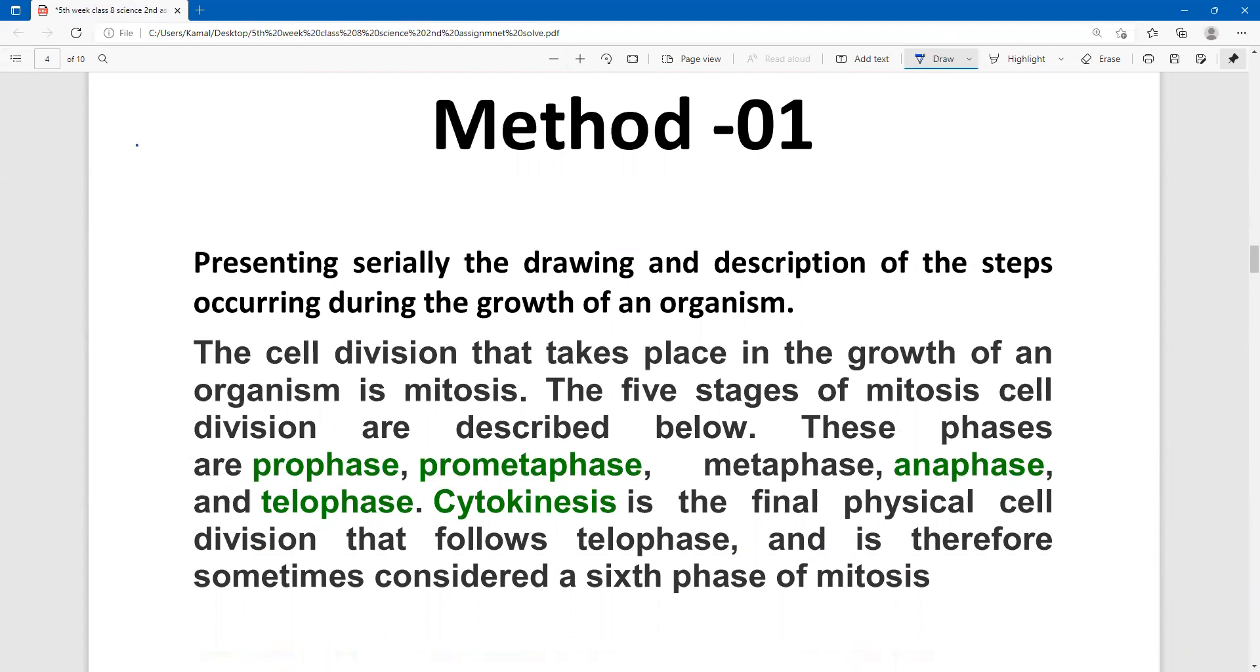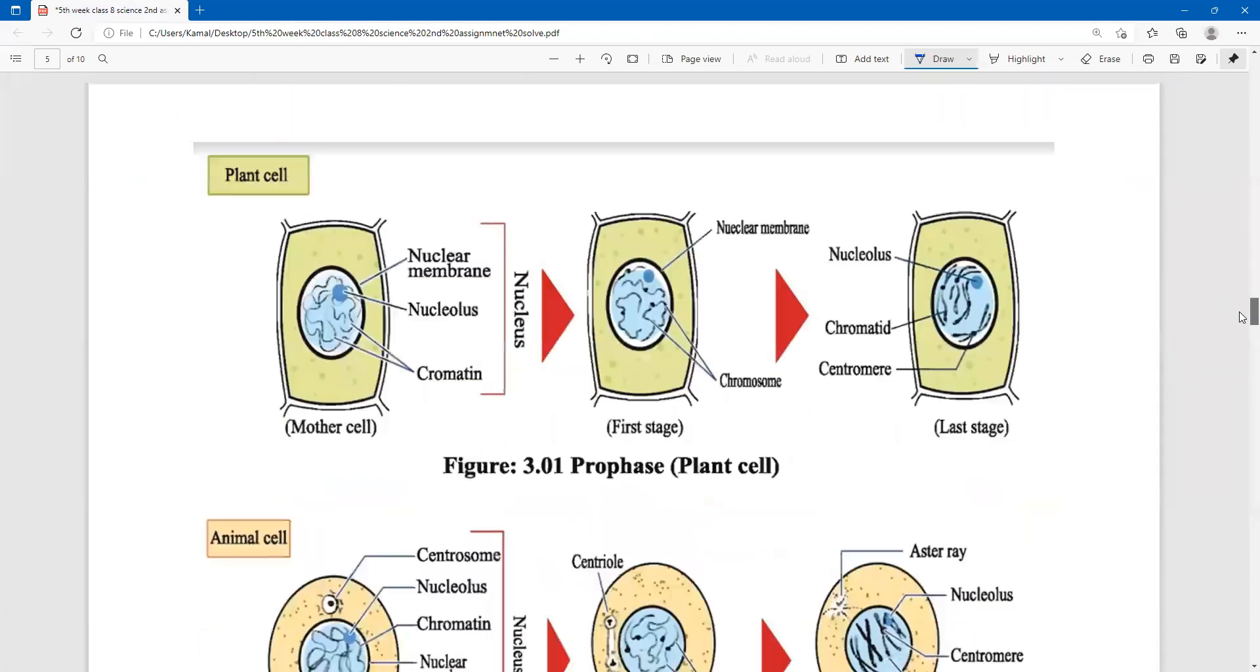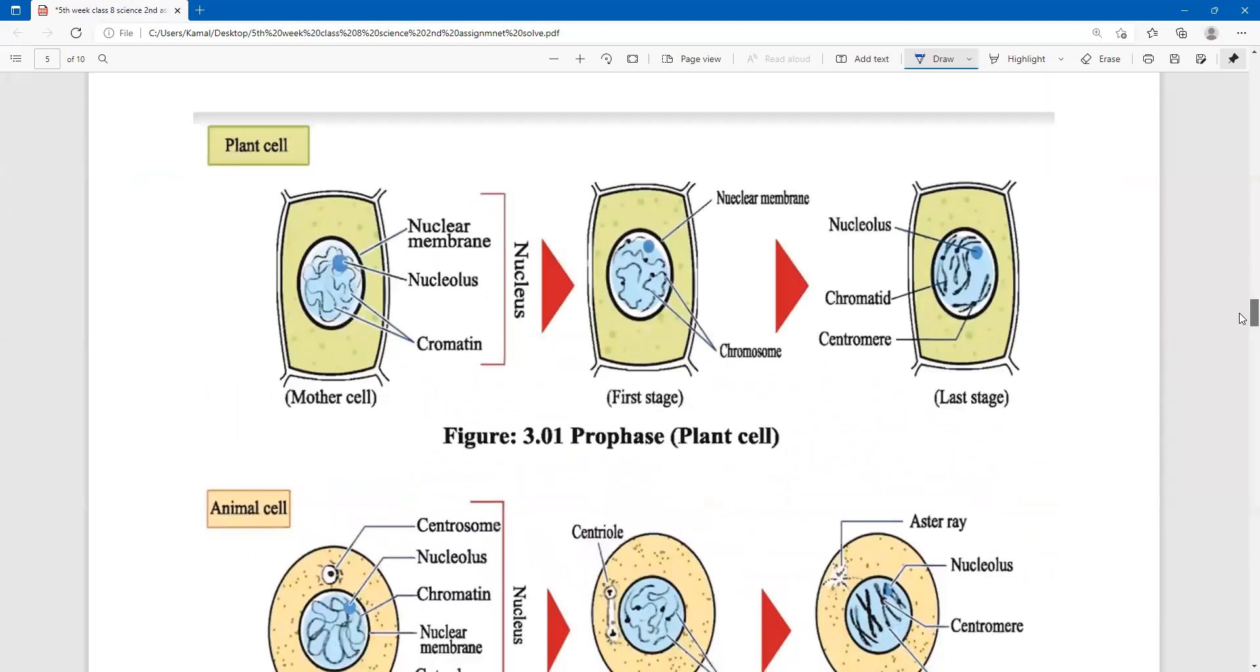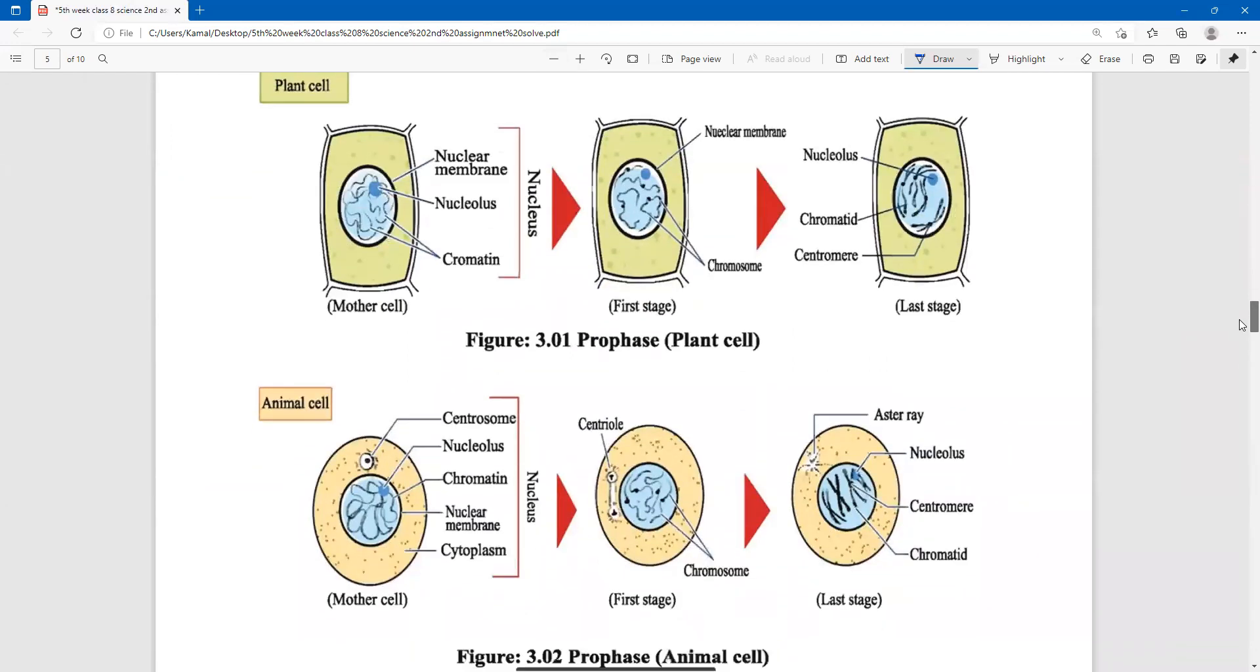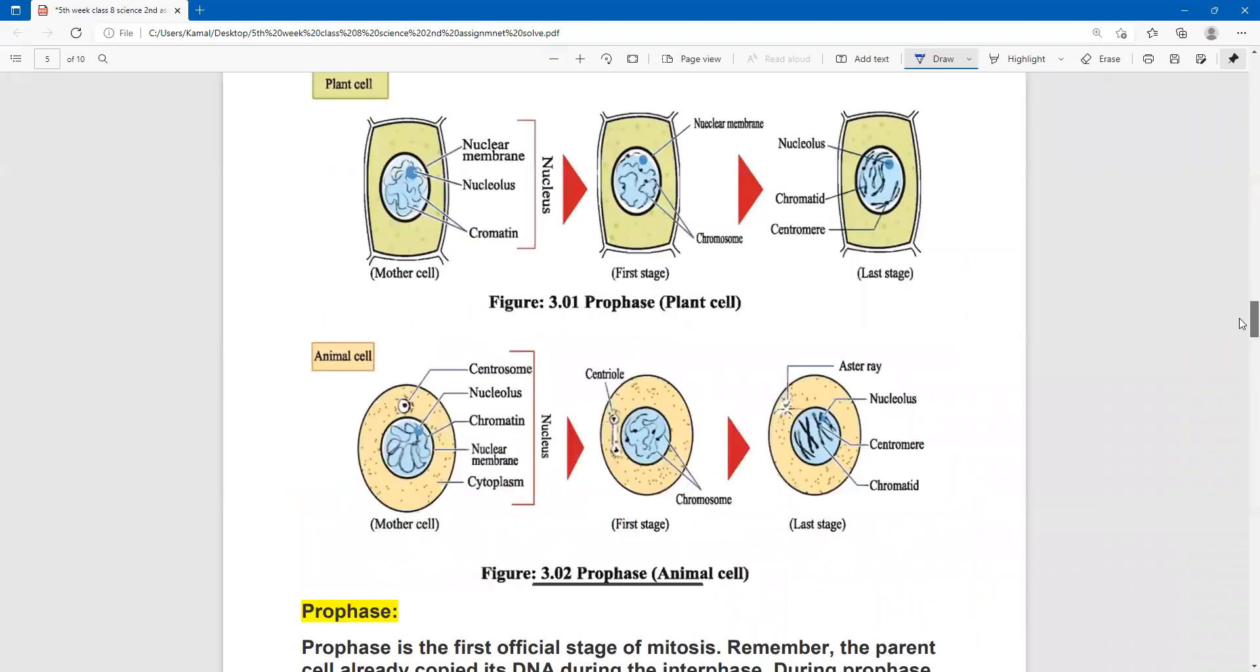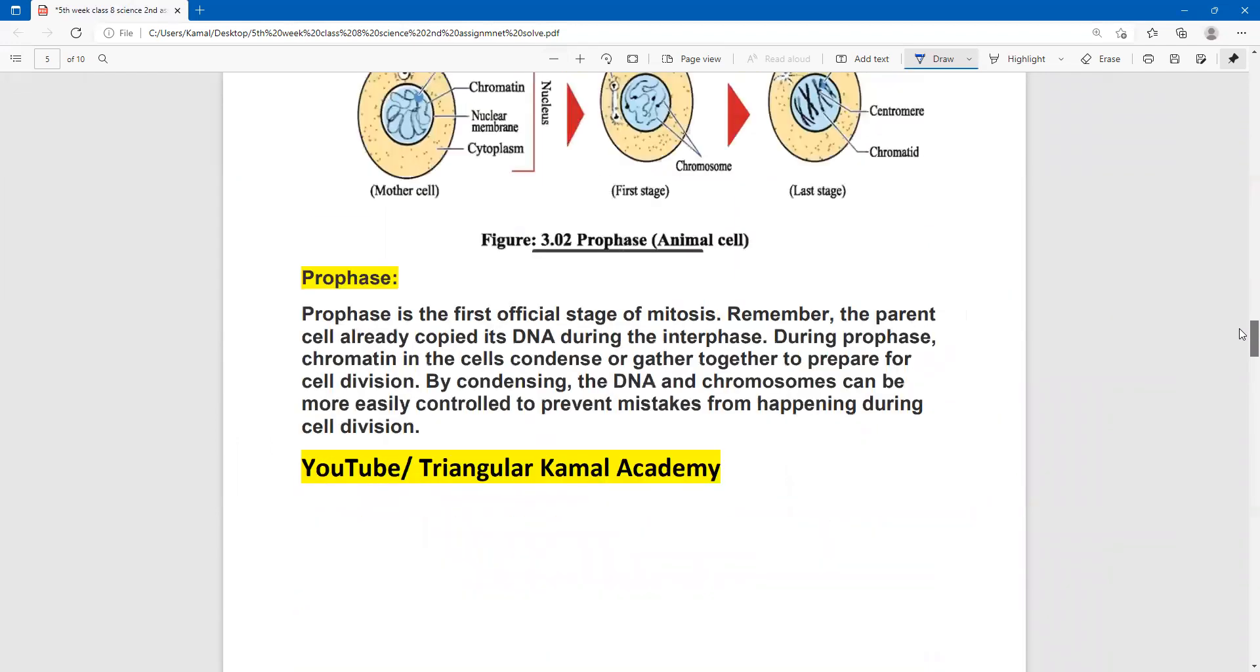We can write P1 of question number B. Now see here. This is prophase. This is the first stage, prophase. Now take the picture, and then characteristics of the prophase.